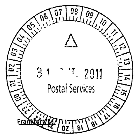Common examples of this type of timestamp are a postmark on a letter or the in and out stamp. In modern times, usage of the term has expanded to refer to digital date and time information attached to digital data. For example, computer files contain timestamps that tell when the file was last modified, and digital cameras add timestamps to the pictures they take, recording the date and time the picture was taken.